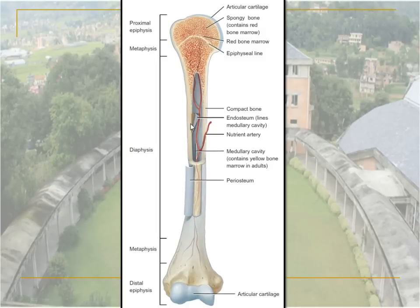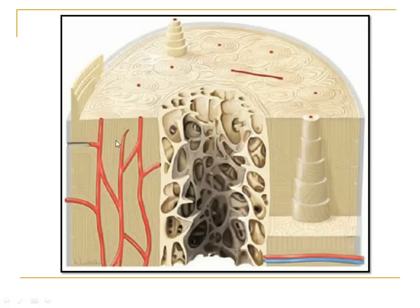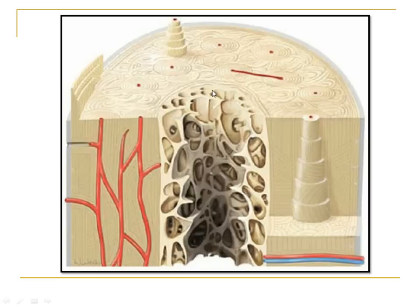Now let's have a look at the compact bone — the wall of the bone on the shaft. The cavity enclosed here is the medullary cavity containing yellow bone marrow in the adult. The shaft consists of two types of bone: the peripheral one is the compact bone, and the part adjacent to the medullary cavity is the spongy type of bone. The compact bone consists of a number of structures that we are going to study today.